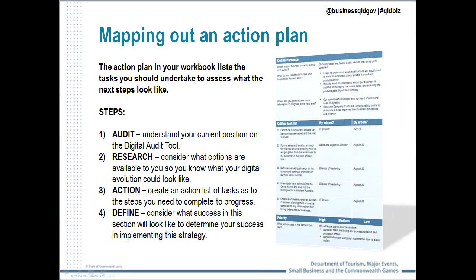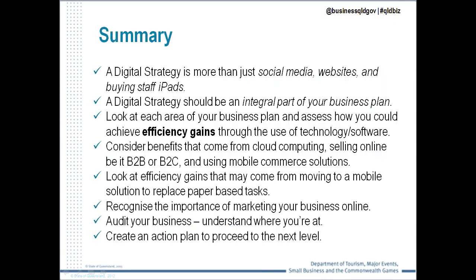The other side of the workbook is the action plan — going through each element of the digital audit and understanding the steps you need to take to progress further. Once you have done the audit, research options available to you, look at others in your sector who are doing well digitally, and create an action plan — a list of desired steps to reach your end goal. The final step is to define what success looks like: for example, going from a brochure website to an e-commerce website with a target of $1,000 worth of sales per week on average.